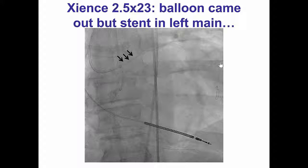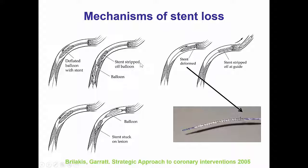However, we could not deliver a stent, and when the stent was pulled back into the guide, it came off the balloon. This is the most common mechanism of stent loss: deformation during attempts to advance it, and then when the stent is withdrawn, it is stripped off the balloon and into the vessel.